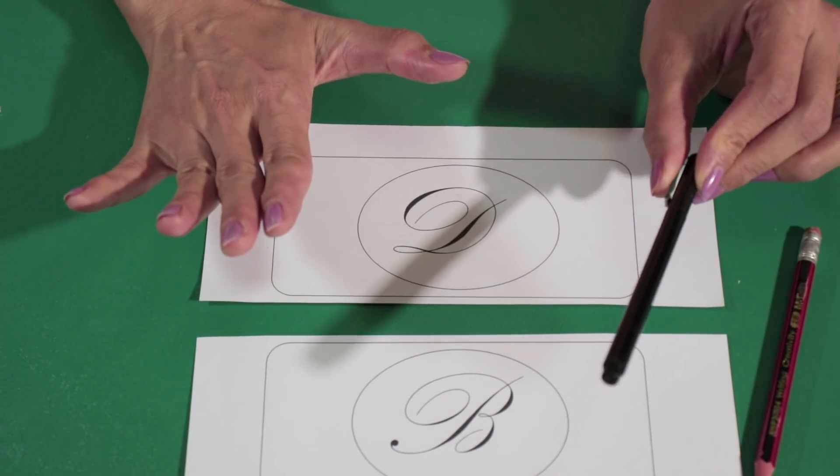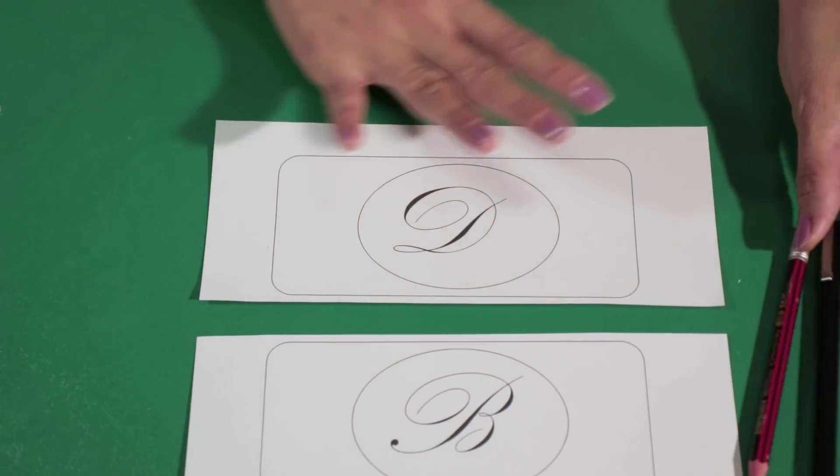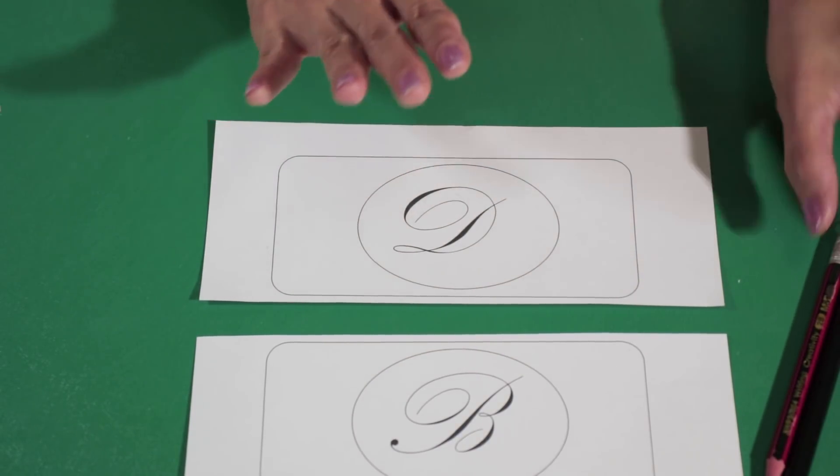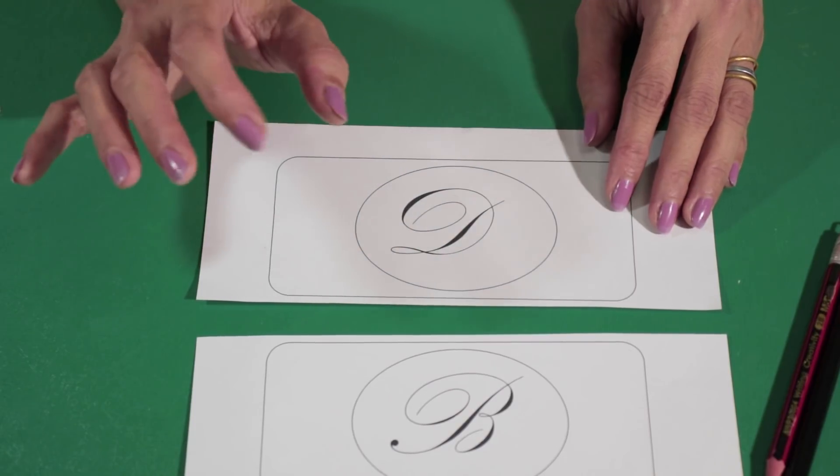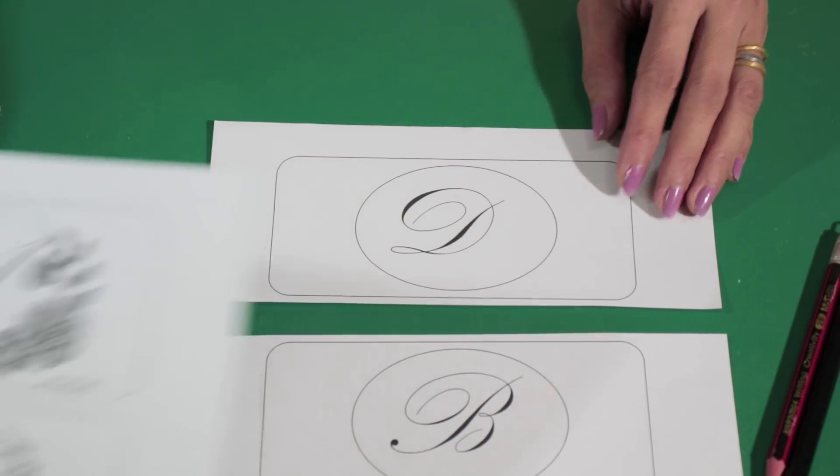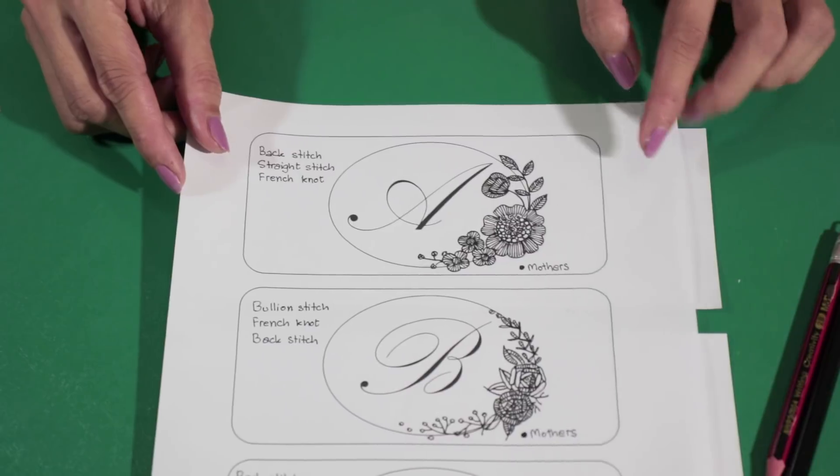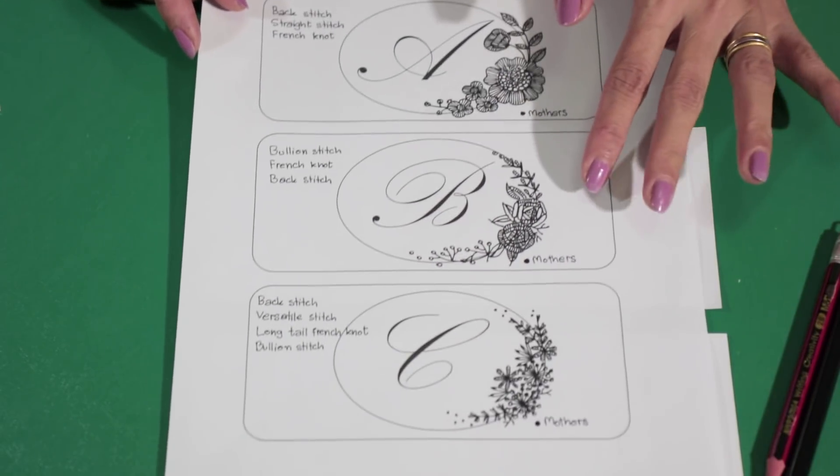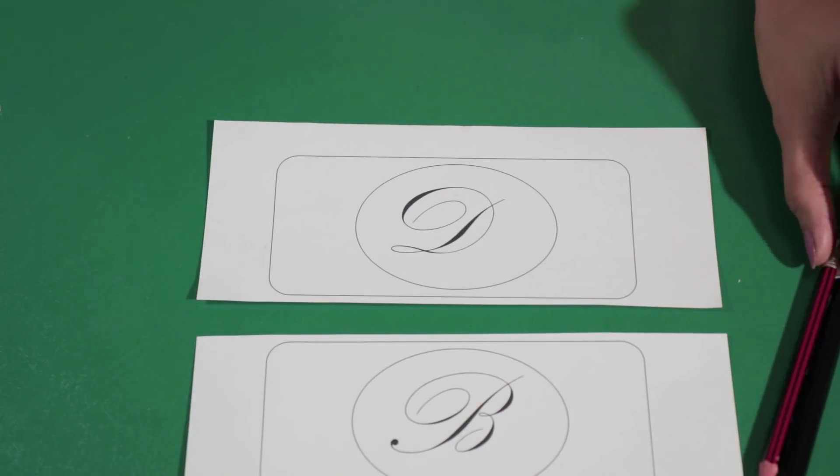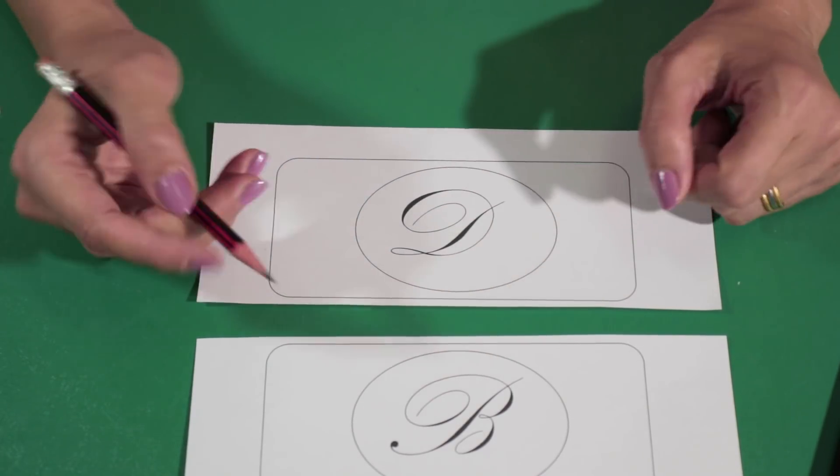And the reason for that is because when I want to make some copies of the pattern, it will be more clear to see. And here are some examples of the patterns that I drew. Okay, now I'm going to draw some flowers on it.